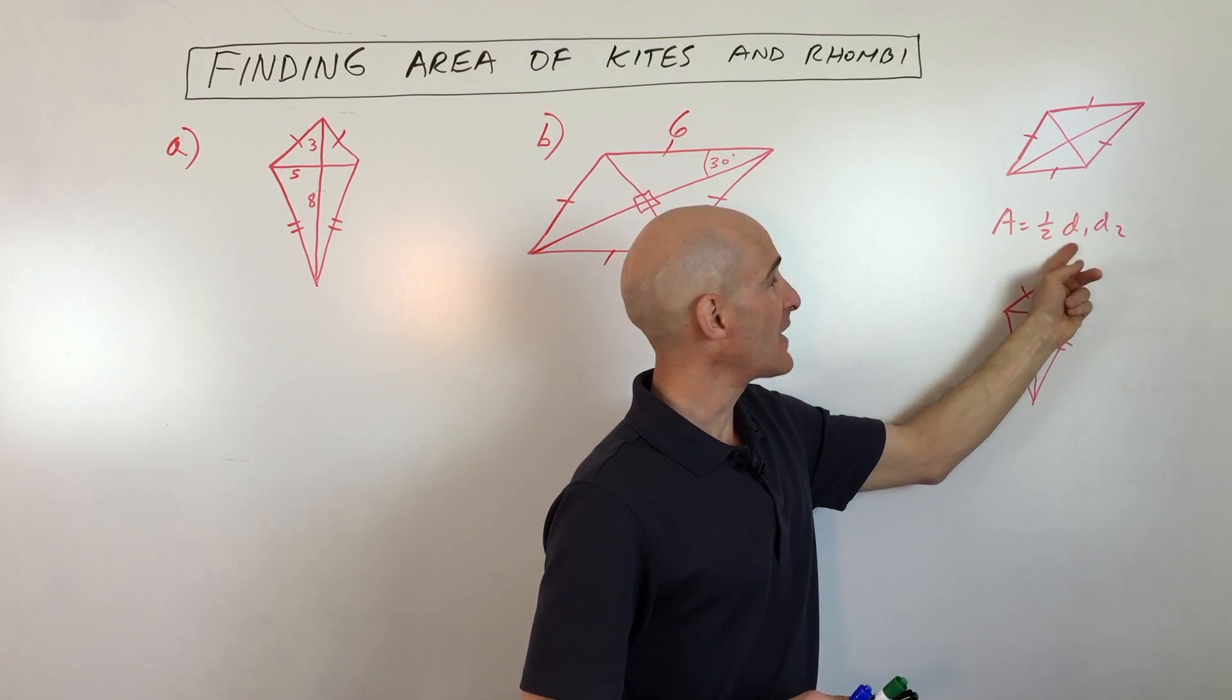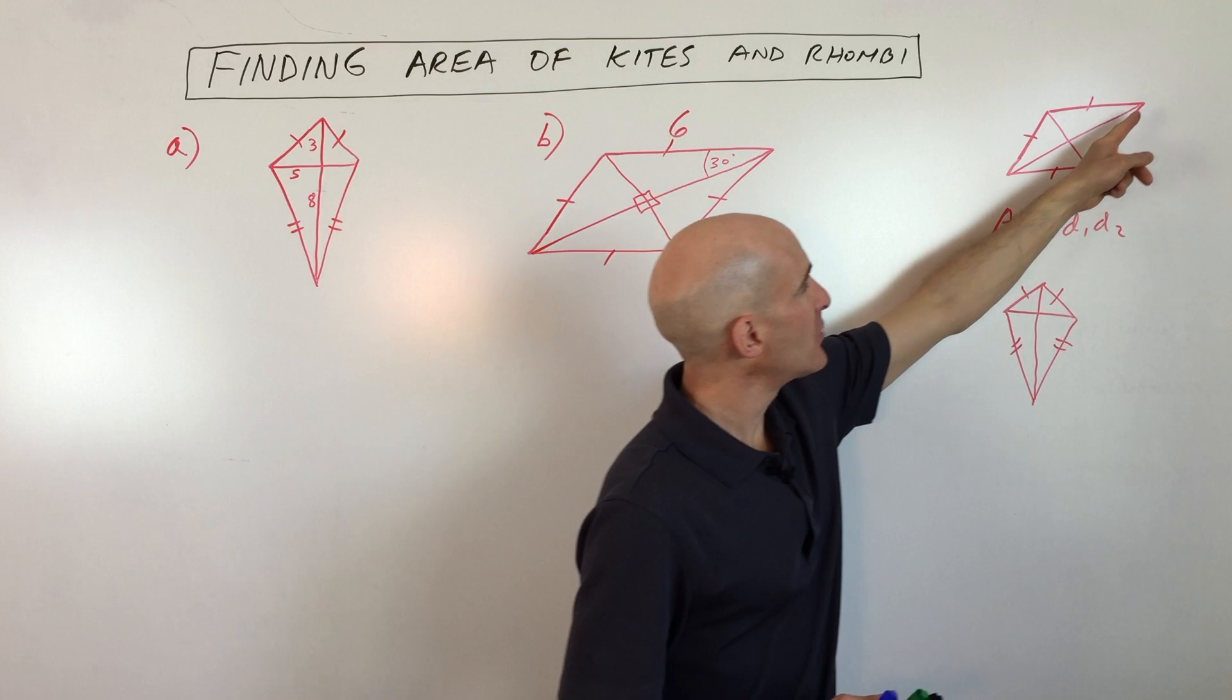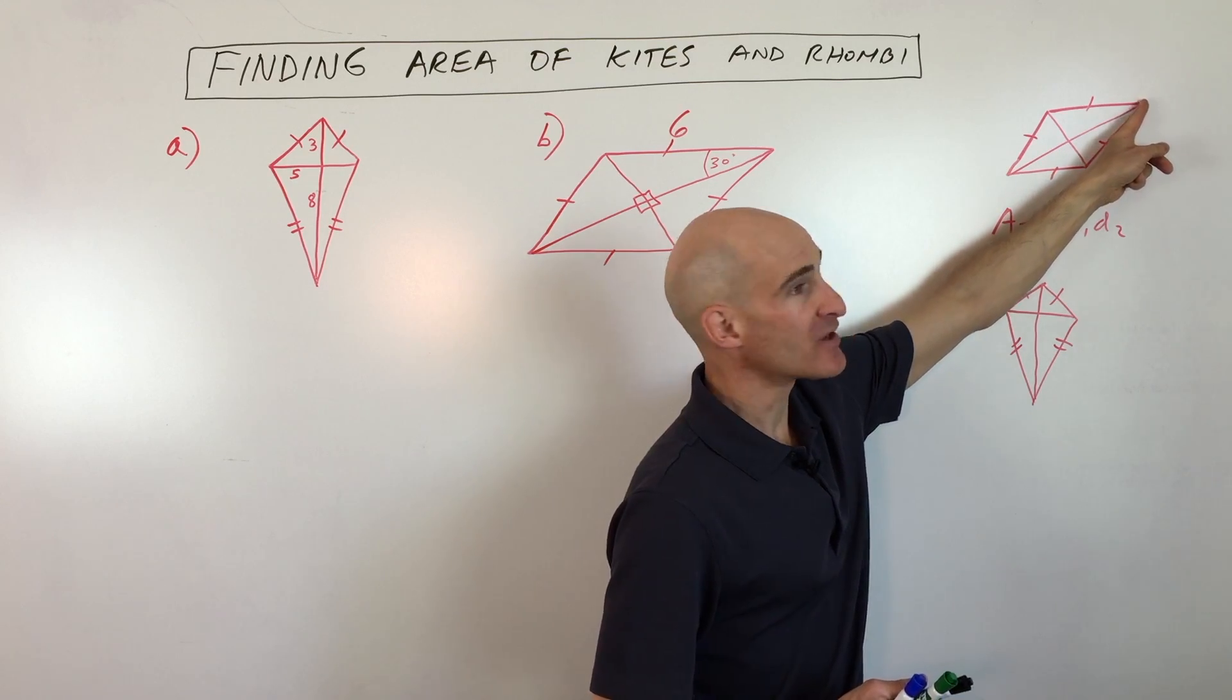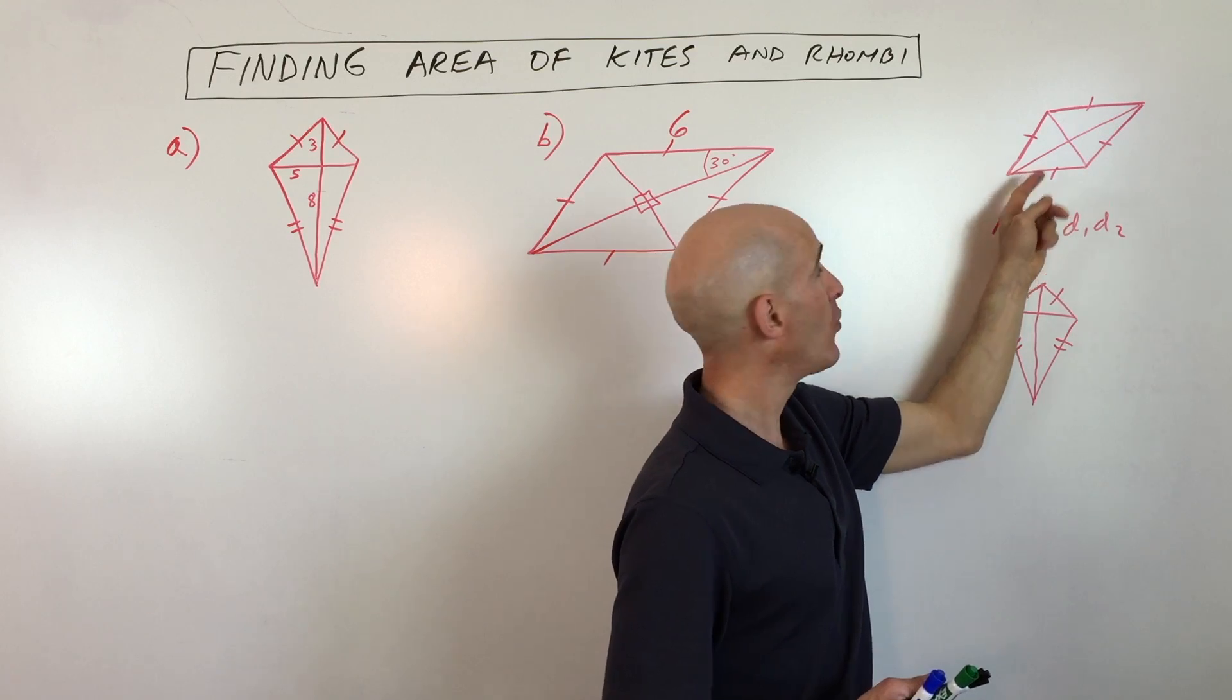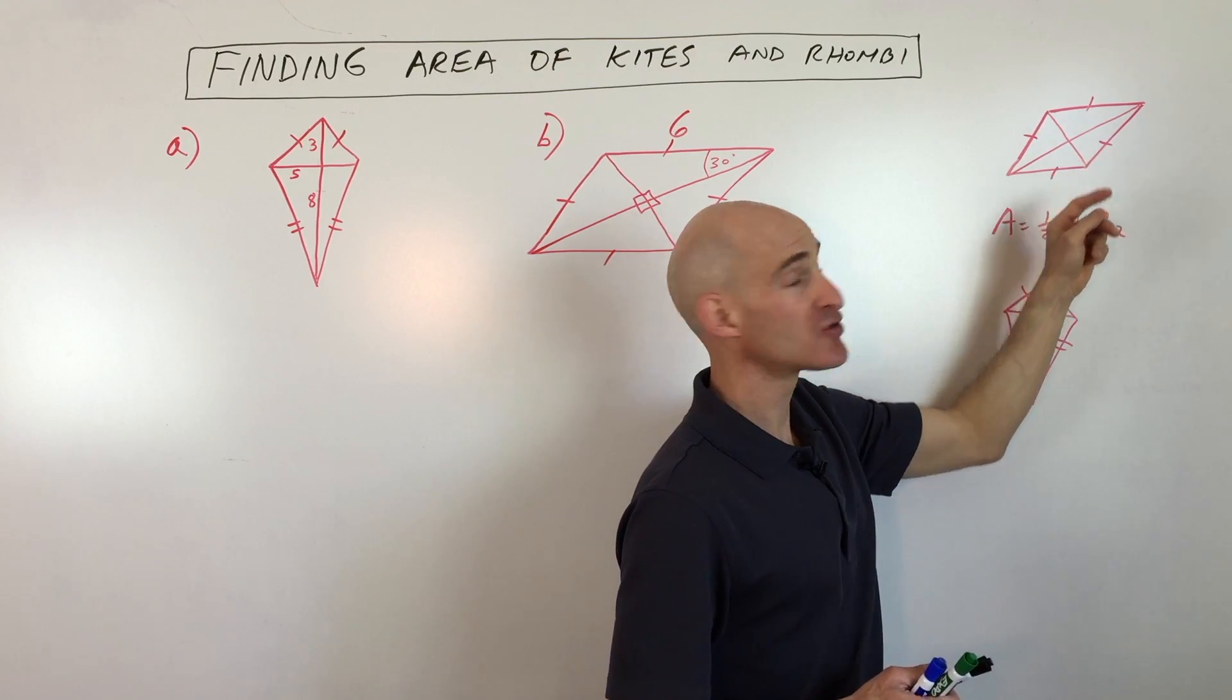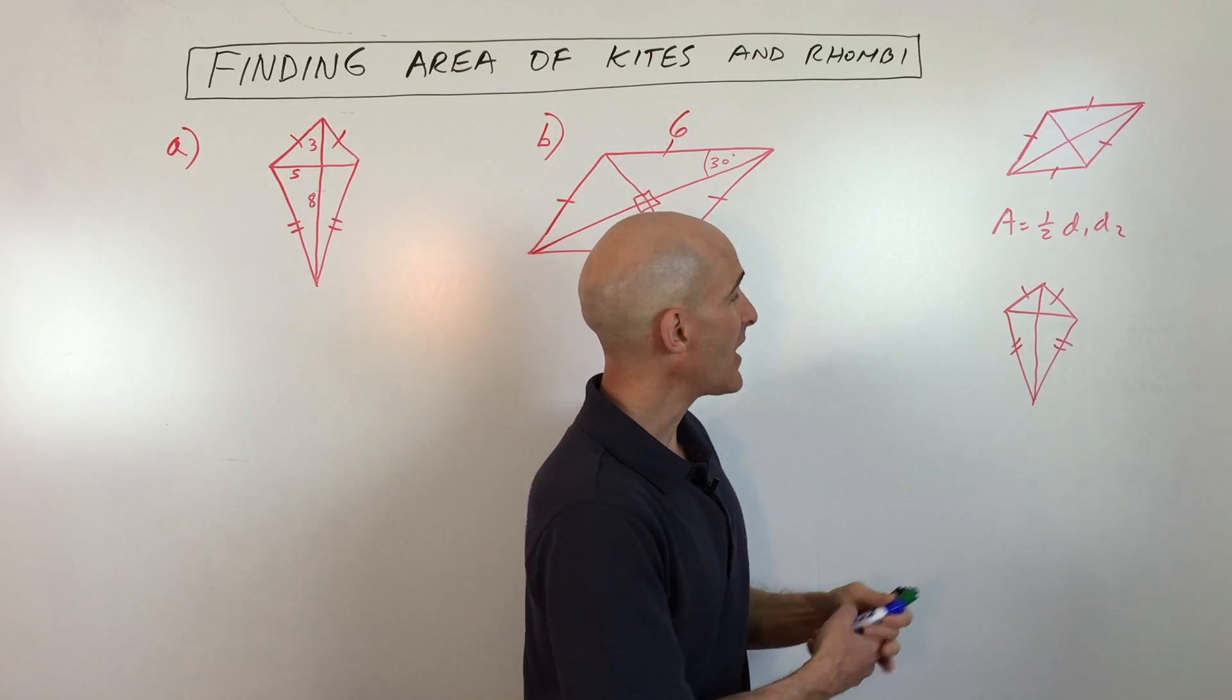The area equals one half diagonal one times diagonal two, so it's a pretty easy formula. The diagonal is the distance from this vertex to the opposite vertex. You can see that whole length is diagonal one, this whole length is diagonal two. Of course it doesn't matter which order because multiplication is commutative, and in a kite it's the exact same formula.